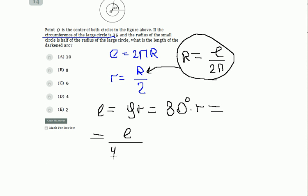L divided by 4π multiplied by R, which is 80 degrees. Let's mark the length of this arc as LA. We will have at the end 80 degrees.